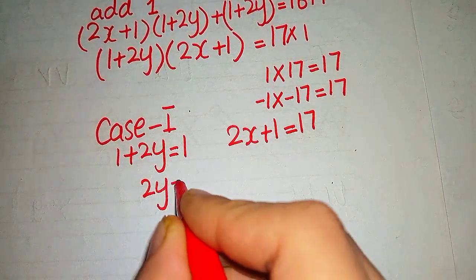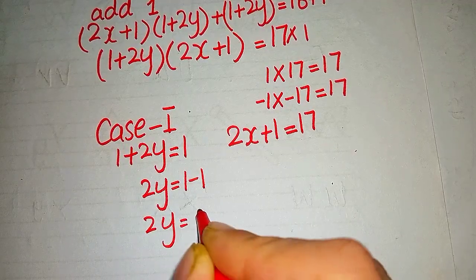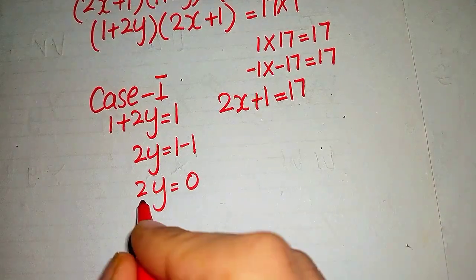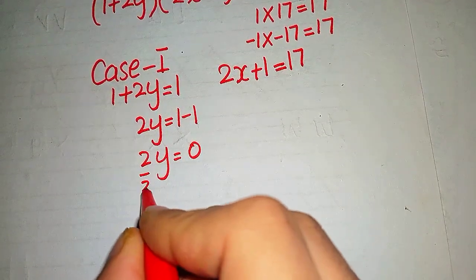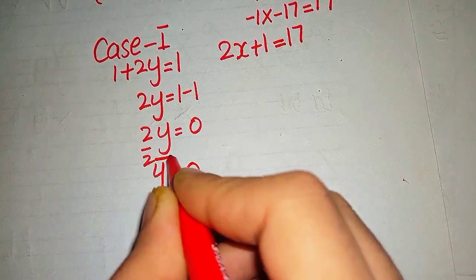2y = 1 - 1, so 2y = 0. Now we divide by 2 and we have got the value y = 0.